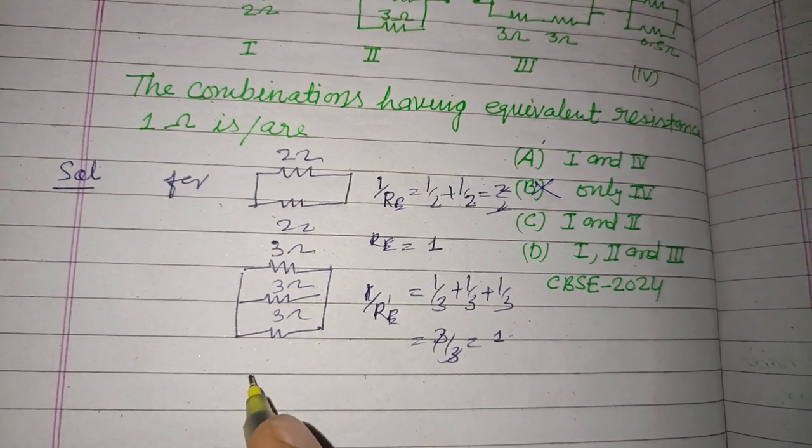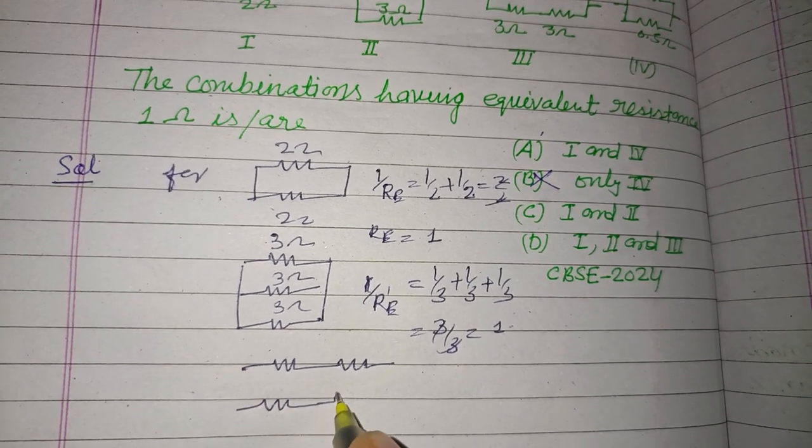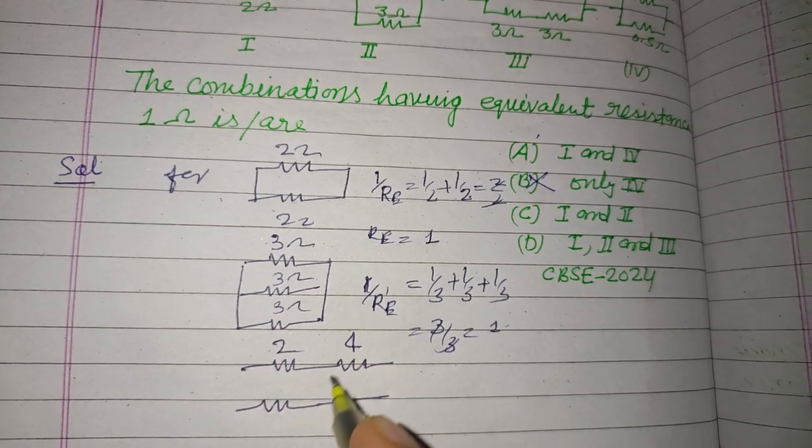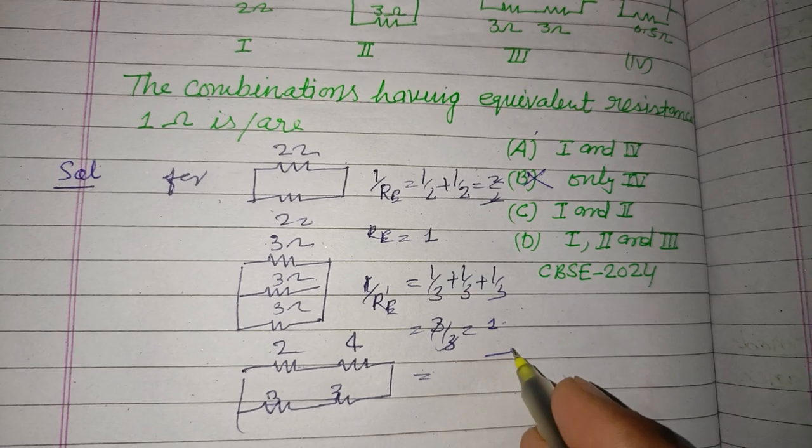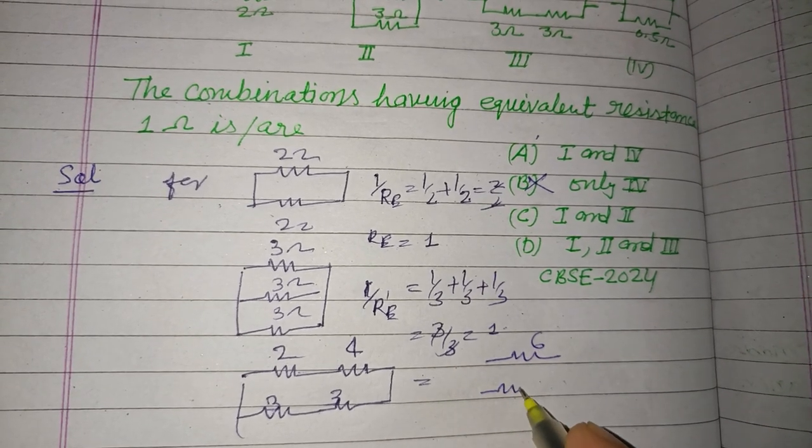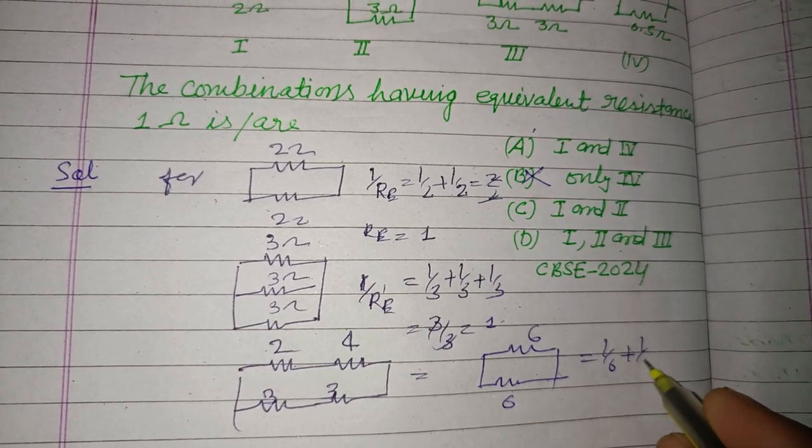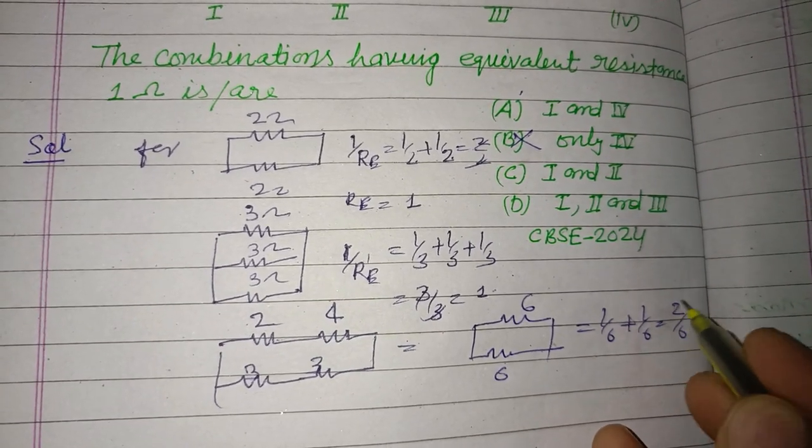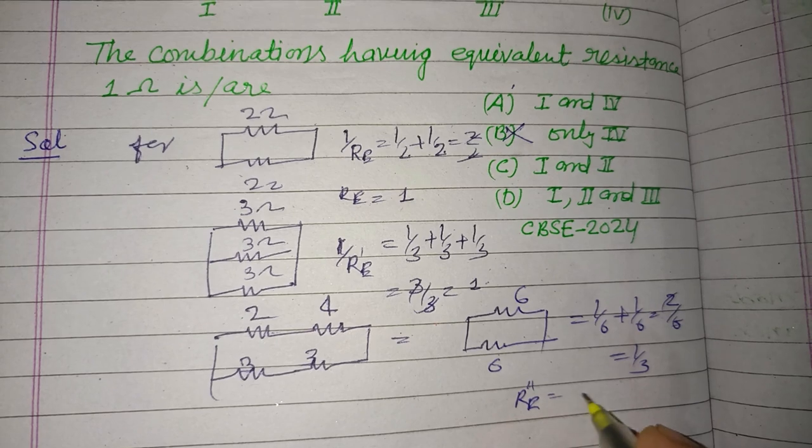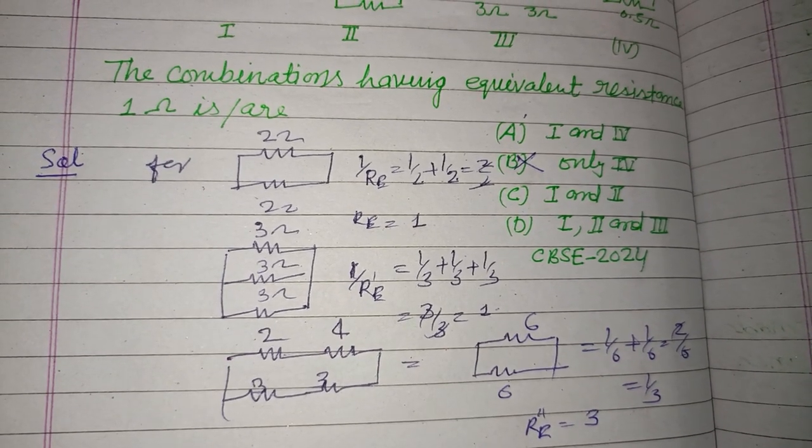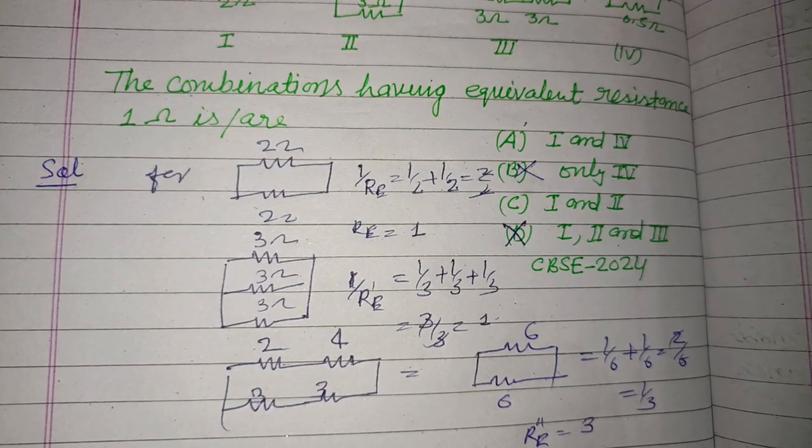Now we check third - 2 omega, 2 omega and 3 omega, 3 omega. Here 2 plus 2 is 4, 3 plus 3 is 6. These are in series combination so it becomes 6, and also 3 plus 3 is 6. So finally we got 1/6 plus 1/6, this is 2/6 which is 1/3, so equivalent resistance R_E double dash equals 3. So third is not coming in this, so this is also not included.